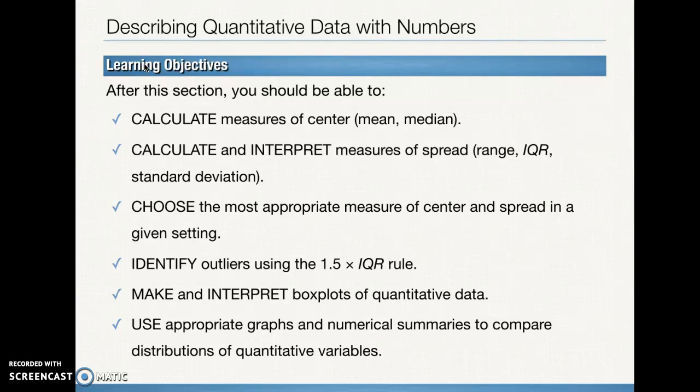The learning objectives are to calculate measures of center — the mean and the median — which we probably already know how to do. We want to calculate and interpret measures of spread: the range, the interquartile range or IQR, and the standard deviation. We also want to choose the most appropriate combination of center and spread for different situations, identify outliers using the 1.5 times IQR rule, calculate the five number summary, make and interpret box plots, and use appropriate graphs with numerical summaries to compare distributions.